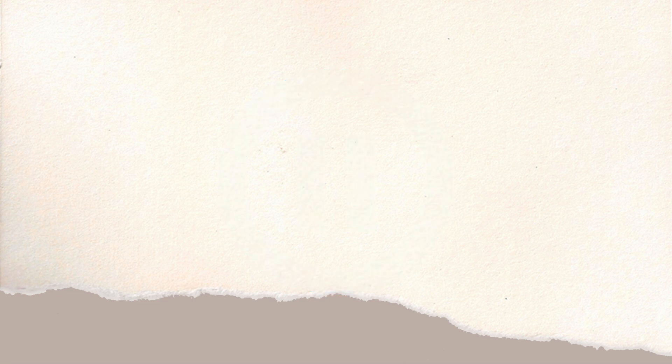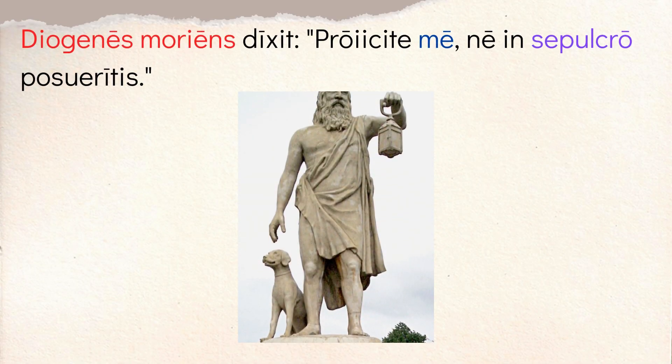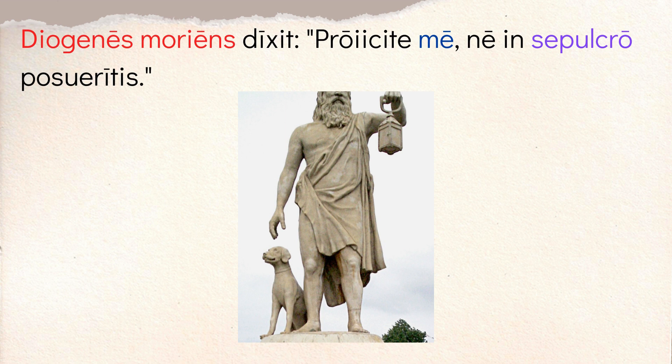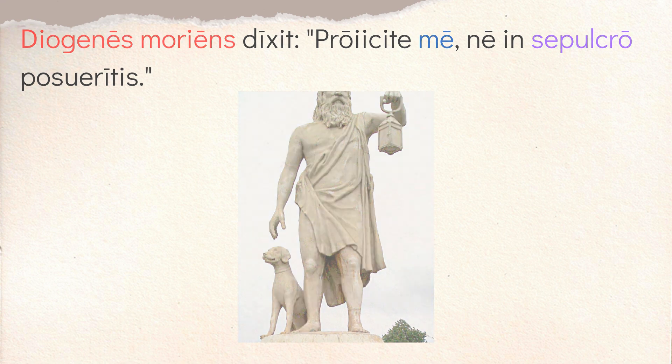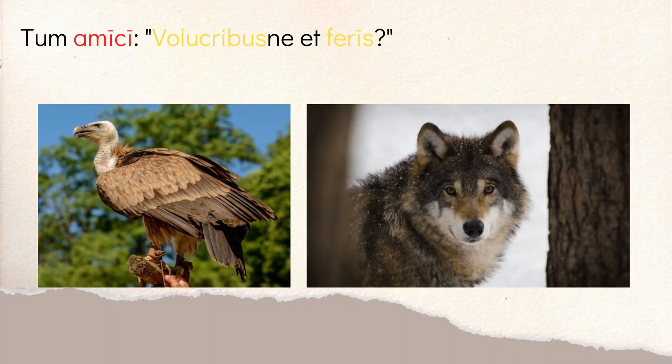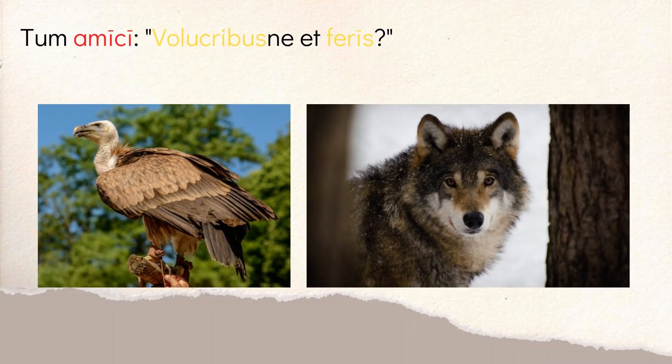We start by talking about Diogenes the famous philosopher. 'Diogenes moriens' — dying, Diogenes said this. He says 'proiecite me' — throw me away or abandon me. 'Proiecite' is an imperative, so he's basically saying 'toss me out.' And 'ne in sepulcro ponatis' — lest you put me in a tomb. He's saying: don't bury me. So: toss me out when I die, don't actually bury me. This is his philosophical moment at the end of his life.